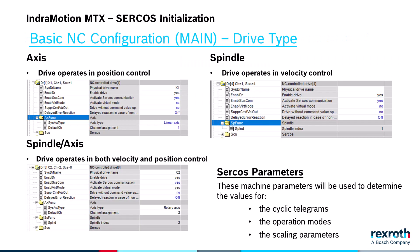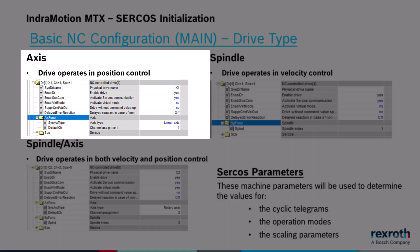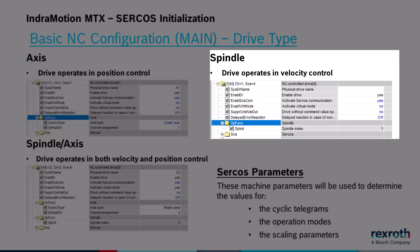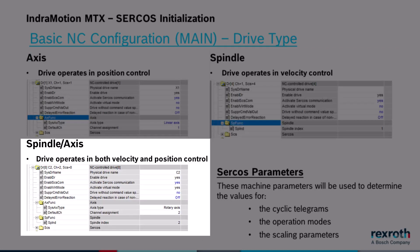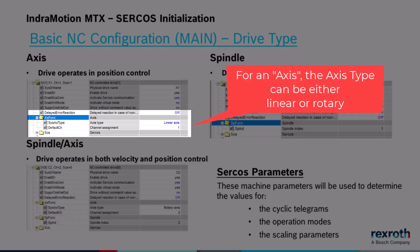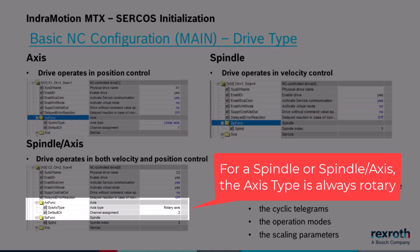In the basic NC configuration group, each drive has a specific drive type. There are three drive types available: axis, which operates in position control mode; spindle, which operates in velocity control mode; and spindle/axis, which can operate in either velocity or position control mode. For an axis, you also have to specify the axis type, either linear or rotary. For a spindle or a spindle/axis, the axis type is always rotary.